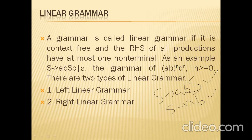Here we take an example: S tends to A, B, S, C, or Epsilon. The null string is also accepted. This is the production rule for A — B to the power of N and C to the power of N. This is about Linear Grammar.